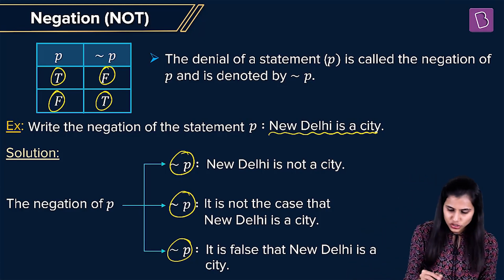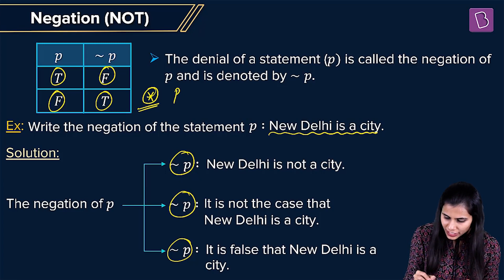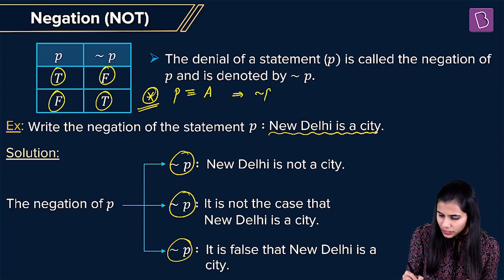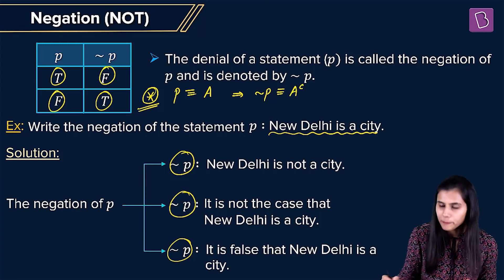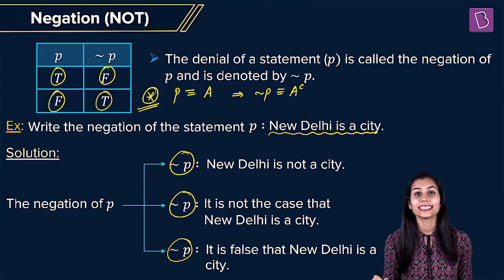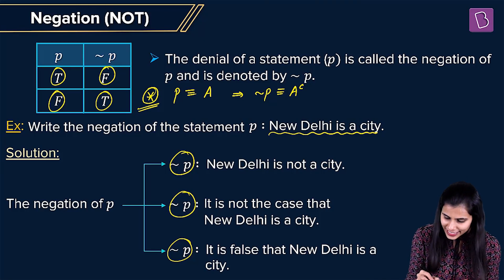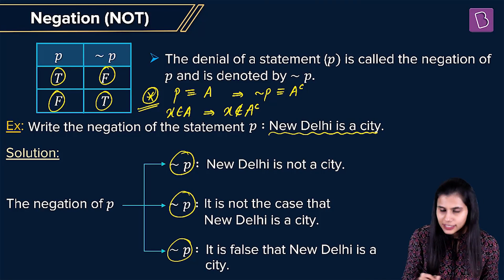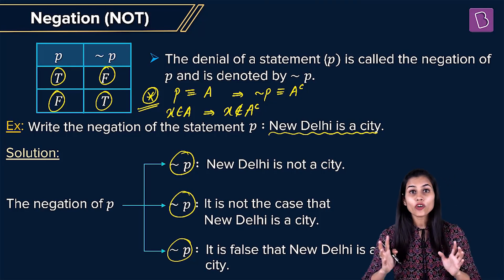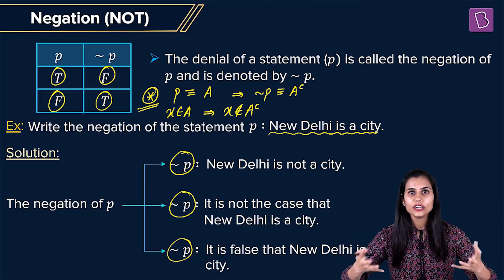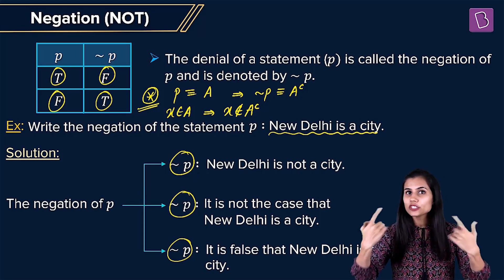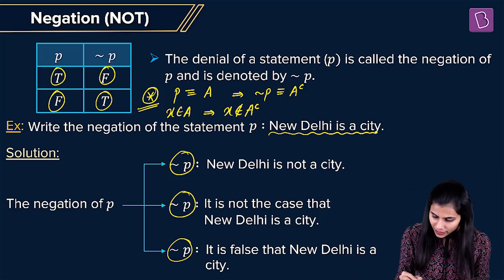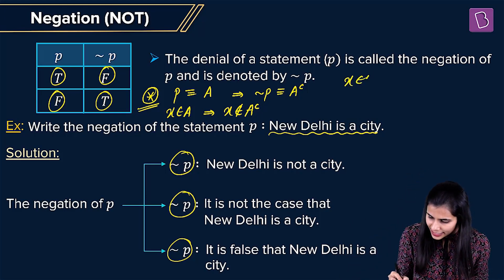Here is a trick: if you treat P as the set A, then negation P is nothing but A complement. When X is in A, that means X is not in A complement — A complement is everything outside A. Similarly, if X is in A complement, that means it is not in A.